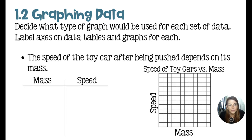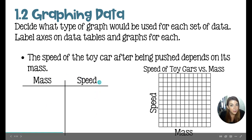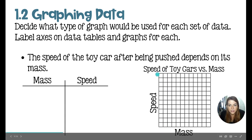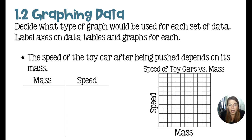For the toy car, your data table would have its first column representing the mass of the cars, and the second column would be the speed of those cars. On our graphs, speed goes on the y-axis and mass would go on the x-axis. I gave it a title 'Speed of Toy Cars versus Their Mass,' and here I would probably use a line graph.